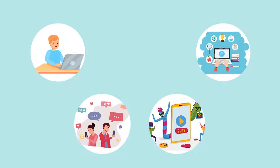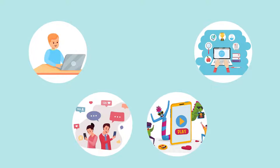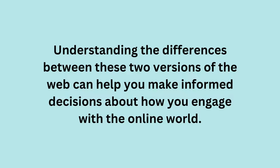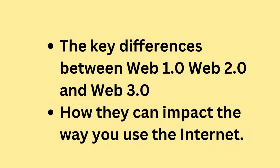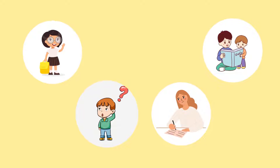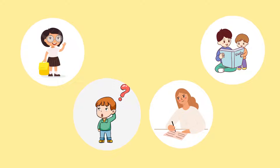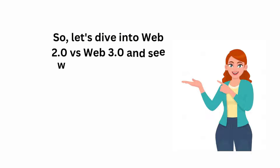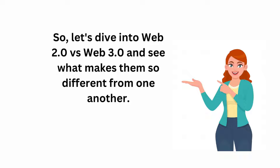Whether you use the Internet for work, communication, entertainment, or education, understanding the differences between these versions of the Web can help you make informed decisions about how you engage with the online world. In this video, we will explore the key differences between Web 1, Web 2, and Web 3, and how they can impact the way you use the Internet. Whether you're a student, a professional, a parent, or just someone who wants to stay informed, this information is relevant and important to know. So let's dive into the generations of the Web and see what makes them so different from one another.